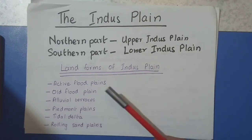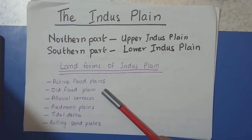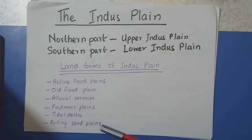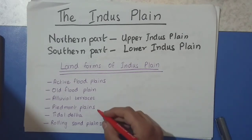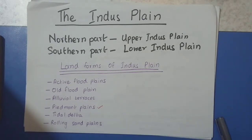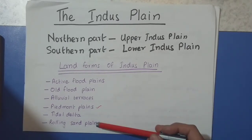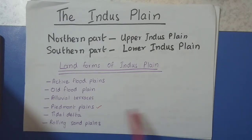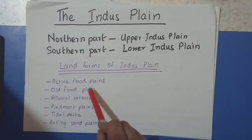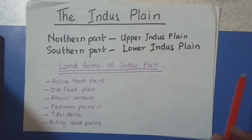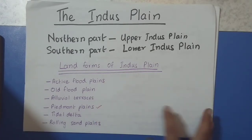These include the active flat plains, the old flat plains, the alluvial terraces, Piedmont Plains, tidal delta, and the rolling sand plains. I've already made a video on the Piedmont Plains, so I'll be giving a link to it in the description box below. Tidal delta and rolling sand plains are not in your course, so I won't be discussing them. We'll be discussing active flat plains, old flat plains, and alluvial terraces as we move along.